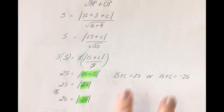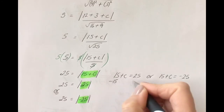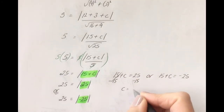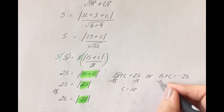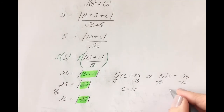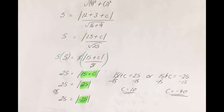That's how we get two values for C. Solving the first equation: take away 15 from both sides gives C equals 10. Solving the second: take away 15 gives C equals minus 40. Those are the two possible values of C.